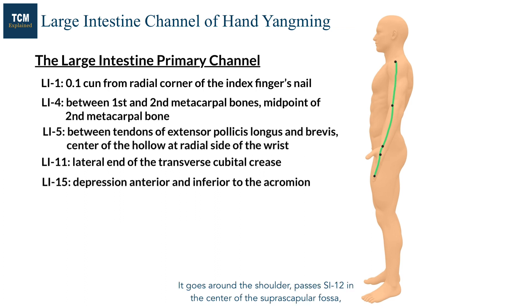It goes around the shoulder, passes SI12 in the center of the suprascapular fossa, and goes to GV14 below the spinous process of the vertebra of C7.